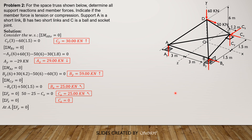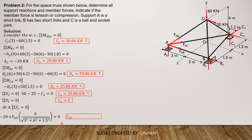We isolate joint A and do summation of forces along Y equals 0 to solve for FAD. FAC is horizontal, FAB is also horizontal — only FAD has a vertical component. AY is negative 29. The distance of AD has X component 3, Y component 6, Z component 1.5. So: negative 29 plus FAD times 6 over the square root of 3 squared plus 6 squared plus 1.5 squared, equals 0. Solving, FAD is 33.224 kN tension.